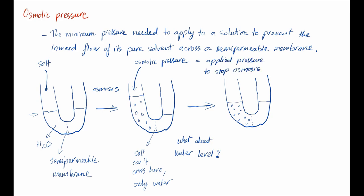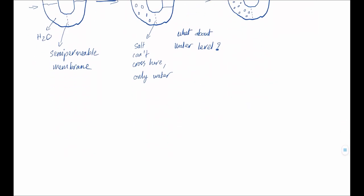Let's look at the equation for osmotic pressure. Pi is equal to capital M times R times T times i. Pi, the capital Greek letter pi, is the osmotic pressure. Capital M is molarity. R is the gas constant. T is temperature in Kelvin, and i is the van't Hoff factor.